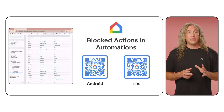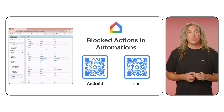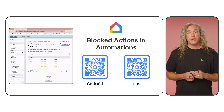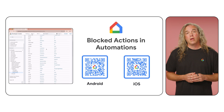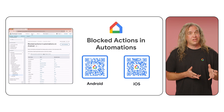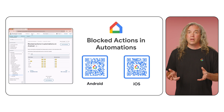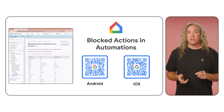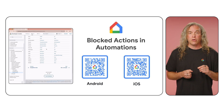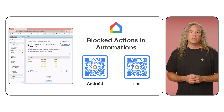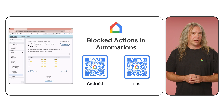Now, before we go any further, there's one important thing to remember. For safety and security reasons, not all device capabilities are available for use in an automation. For example, you cannot create an automation that starts an oven or unlocks a door. So depending on the combination of device type and action, some actions are blocked for use in a Home API's automation. For a full list, scan the QR code to view the Blocked Actions page.